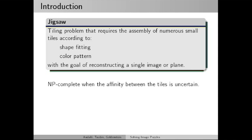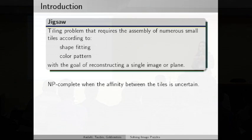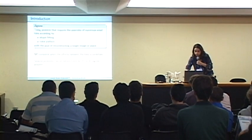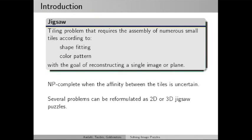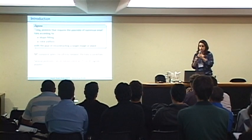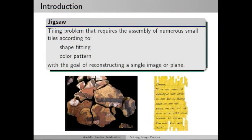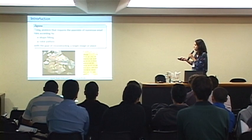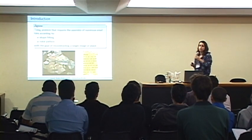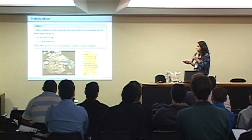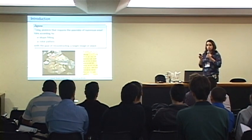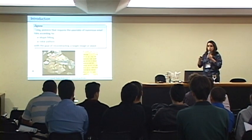This is known to be an NP-complete problem because we don't know any affinity function between the tiles that is 100% accurate. Besides that, several scientific problems can be mapped to 2D or 3D jigsaw puzzles. Here I have two examples. The first is the assembling of archaeological artifacts to form a unique 3D object, and the second application is the assembling of paper tiles that come from a shredded document.